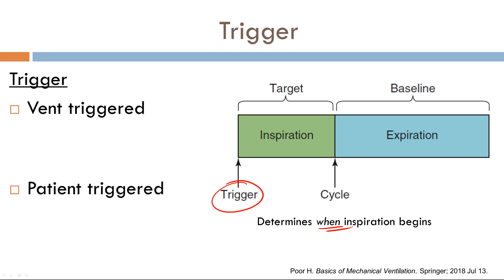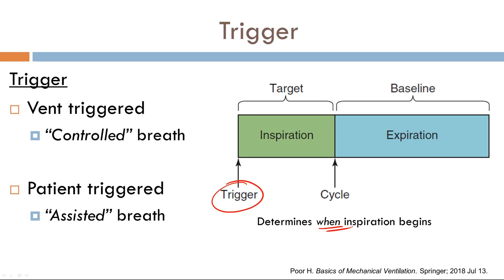Let's fine-tune our terminology. If you have a ventilator-triggered breath, we'll be calling that a controlled breath. Any ventilator-triggered breath from now on will be called a controlled breath. If you have a patient-triggered breath, that is known as an assisted breath.